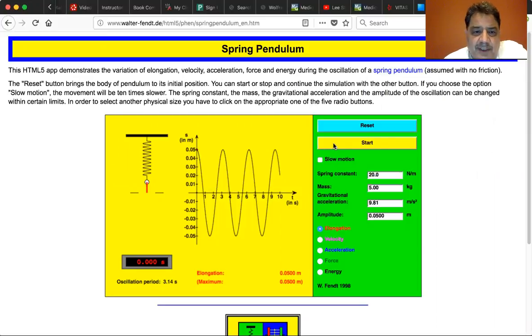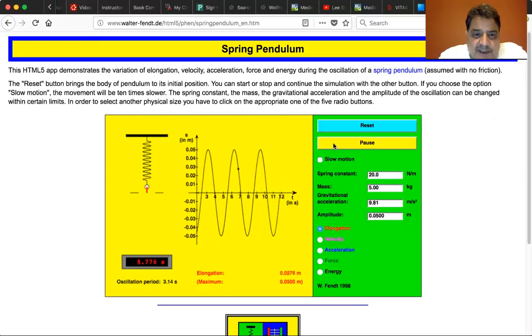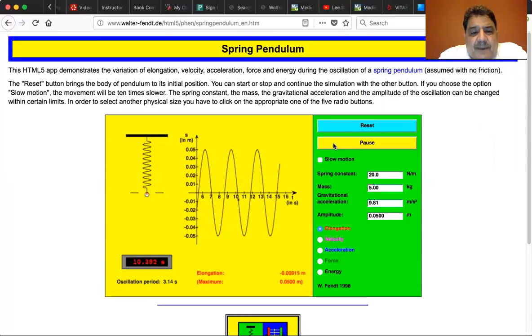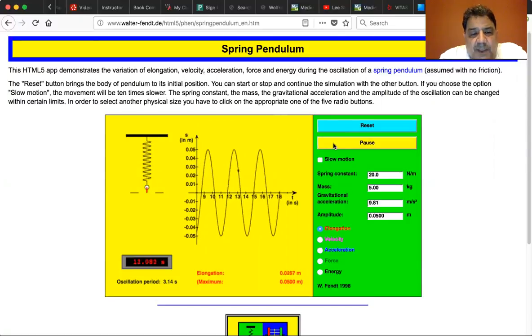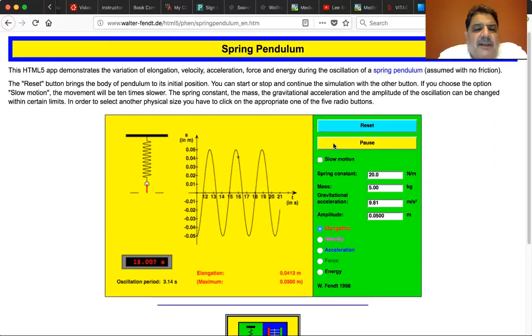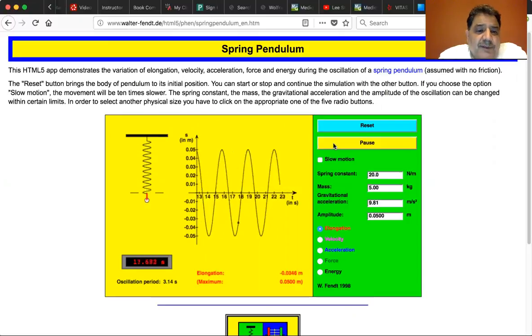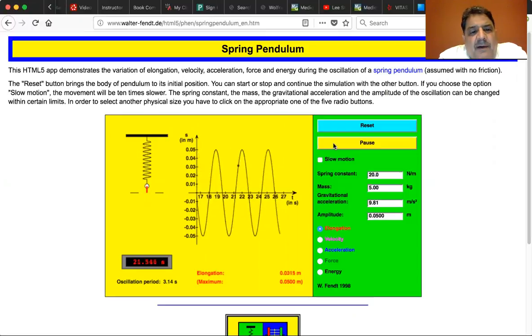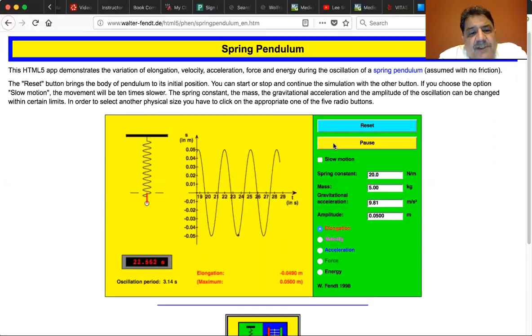Let's go ahead and start it, and you'll see that the pendulum, spring pendulum in this case, is going back and forth, and you'll see that what is showing now, the little orange line that goes from the center of the ball to the zero position of the graph, is the displacement.